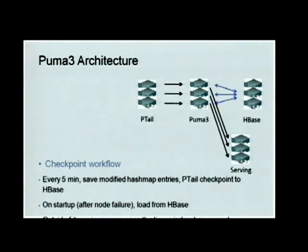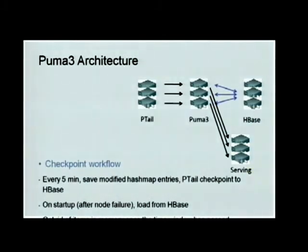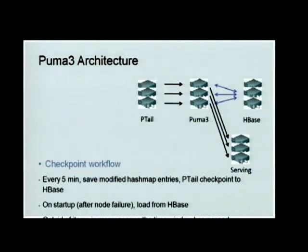The checkpoint workflow: to make sure the application still works when a single process dies, we checkpoint the data every five minutes into HBase. We save all the modified hash table entries plus the PTail checkpoint positions to HBase storage. On startup after a node failure, we load the data from HBase — this read is a sequential scan of all the data, so it's actually pretty efficient.